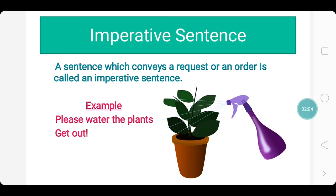Then we move on to imperative sentence. A sentence which conveys a request or an order is called an imperative sentence. In an imperative sentence, something is expected to be done by someone — there is a command, an expectation of some deed to be done. For example: please water the plants — this is a request. Get out — this is an order.